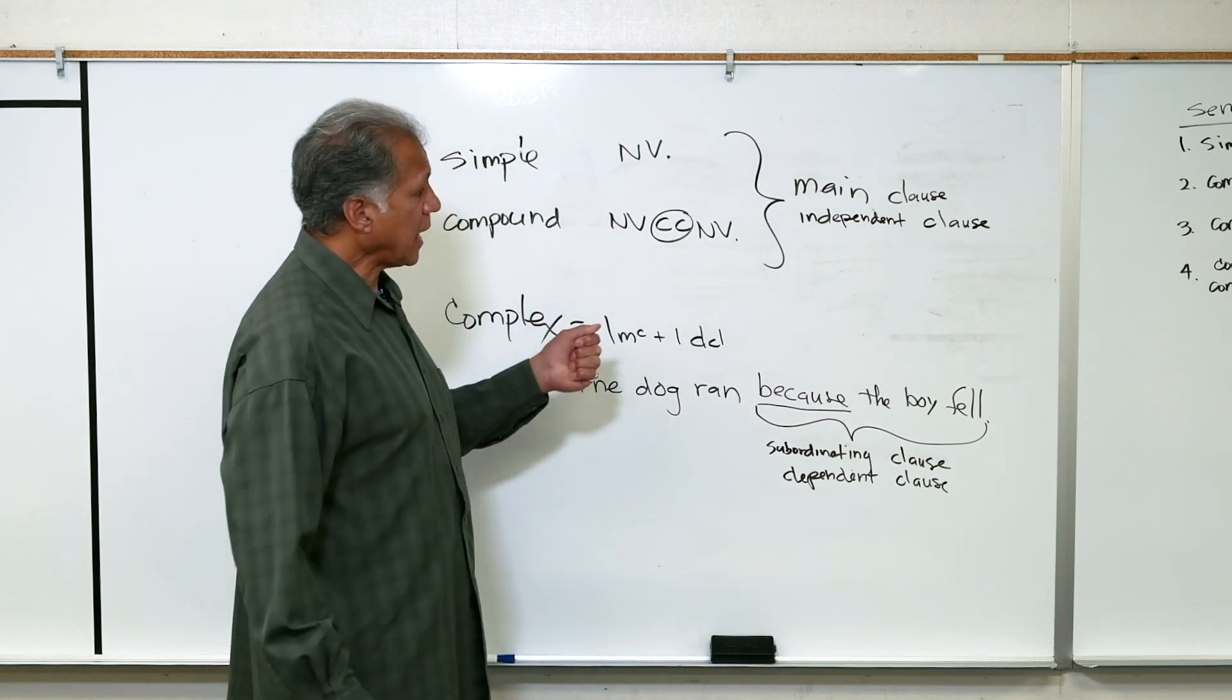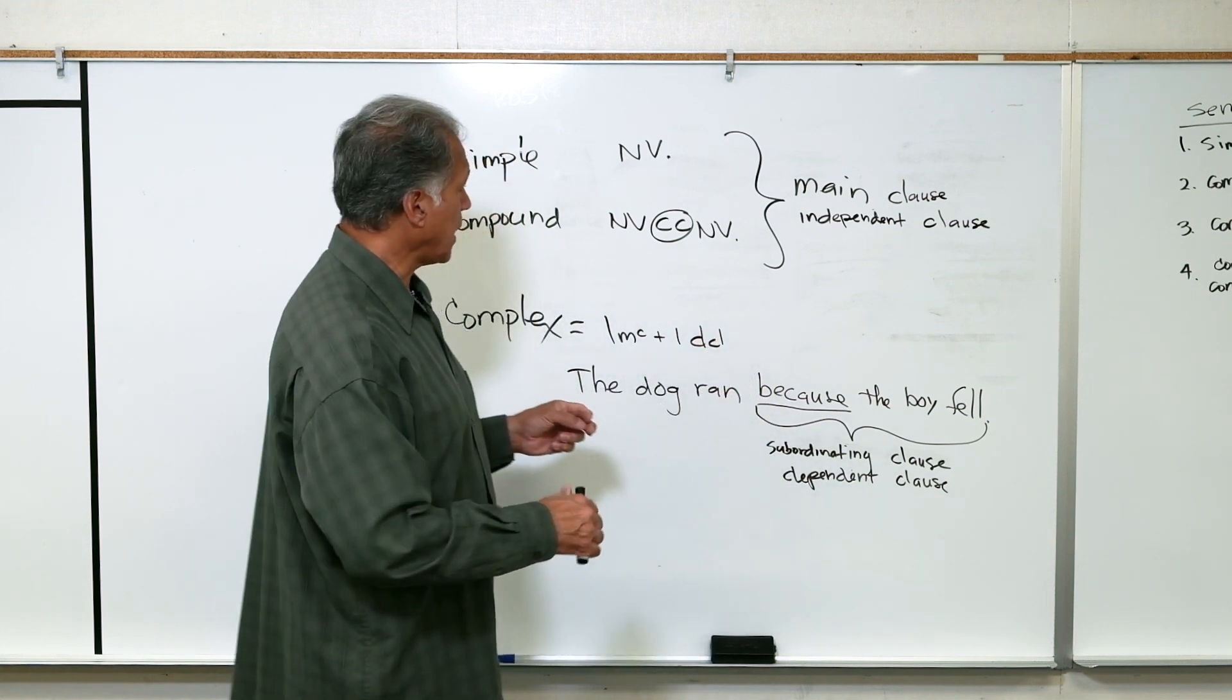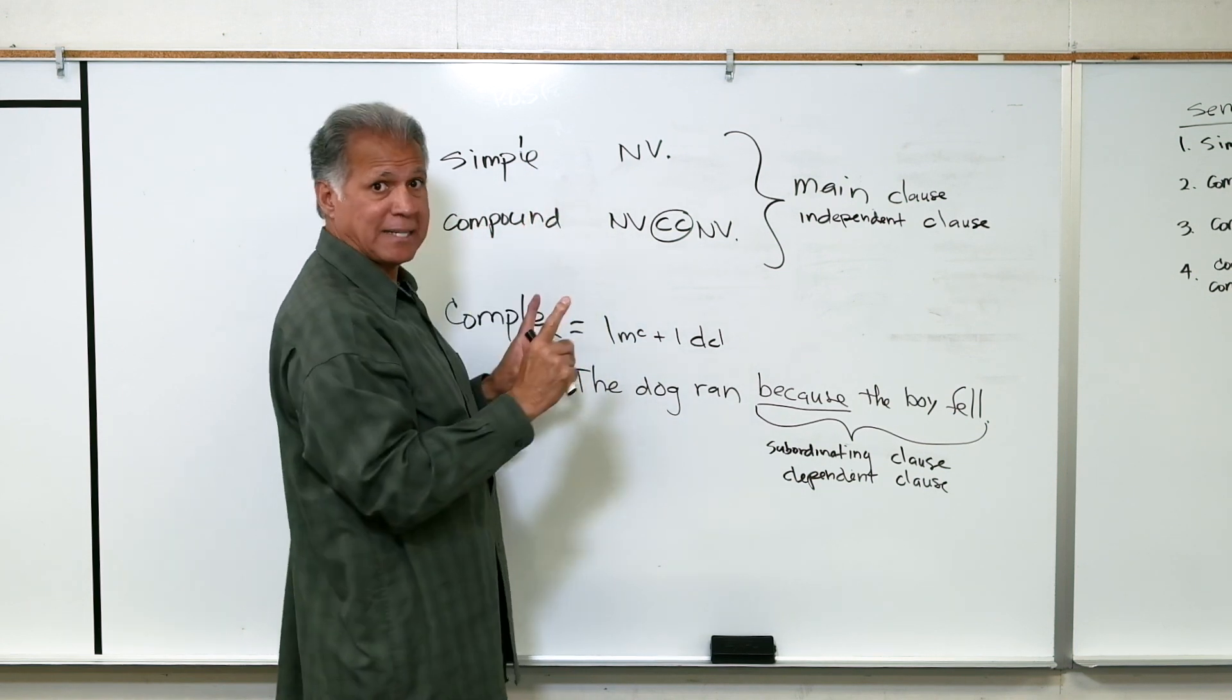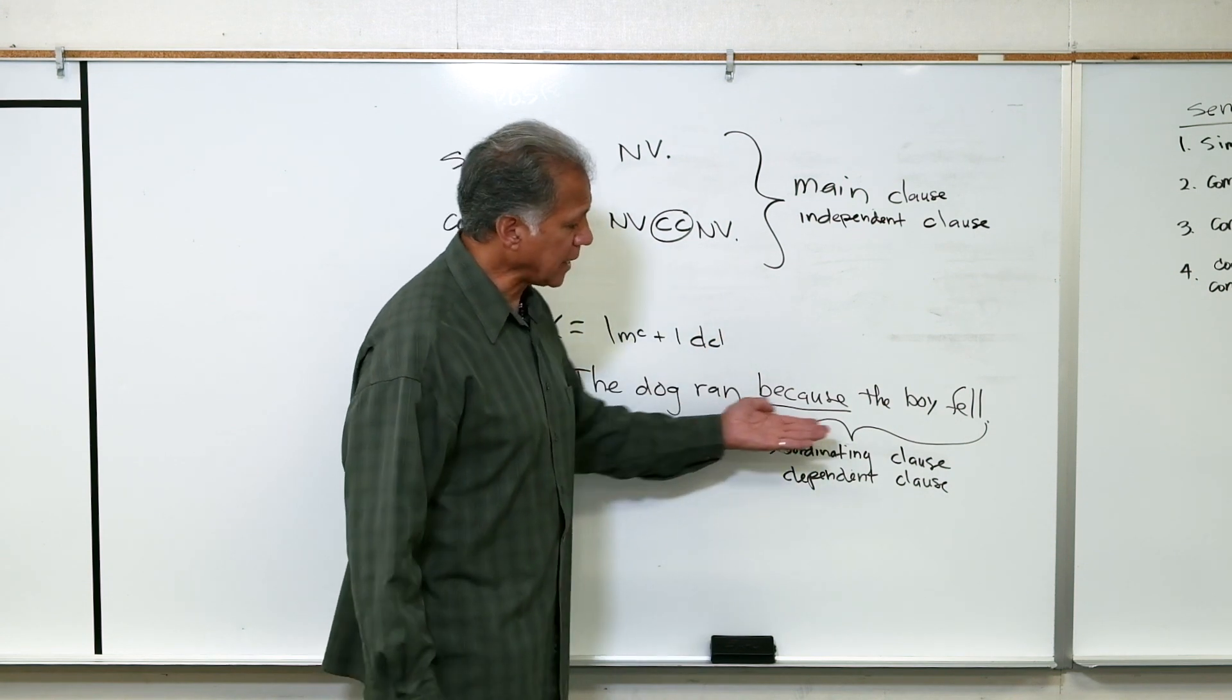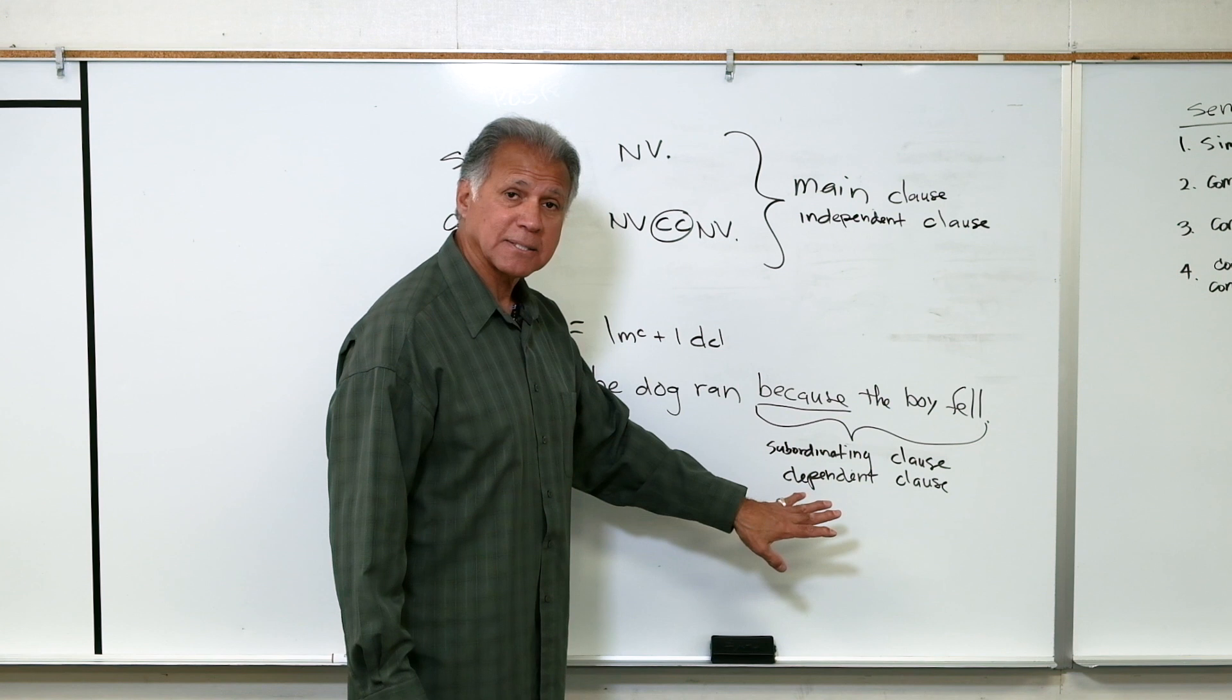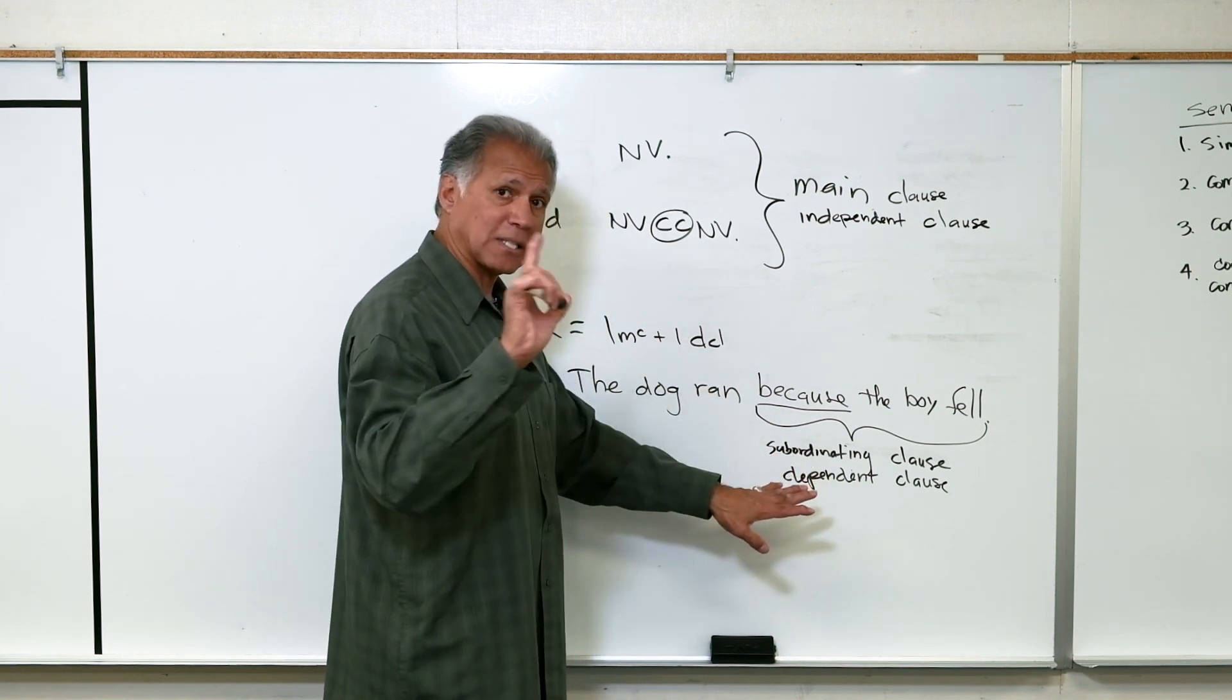Now, to make a dependent clause, all you're going to do is take a simple sentence, which you have already written, and we're going to attach a subordinating conjunction in front of it, and that will create a dependent or subordinating clause. And I'm going to show you how to do this in the next lesson.